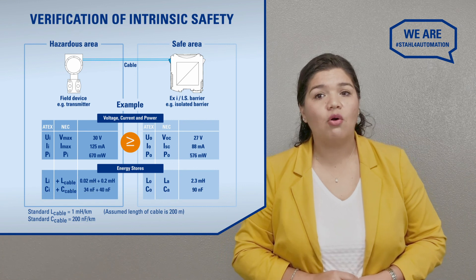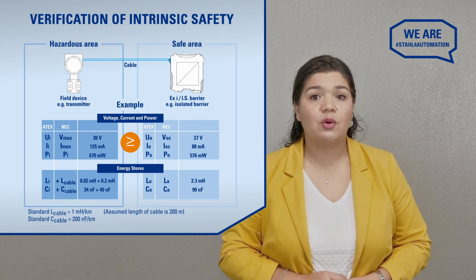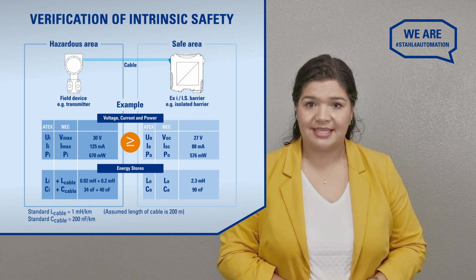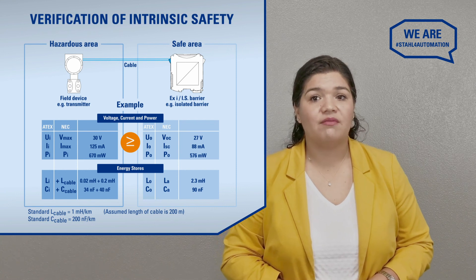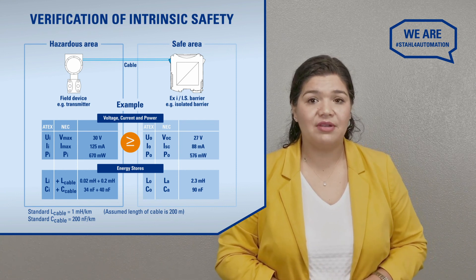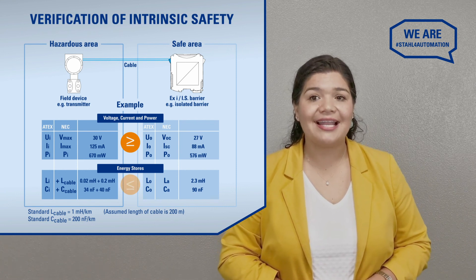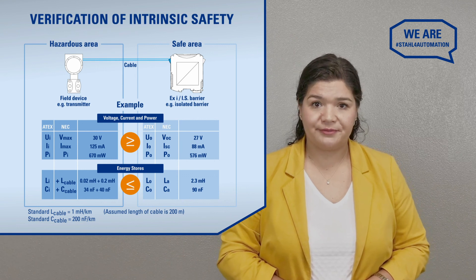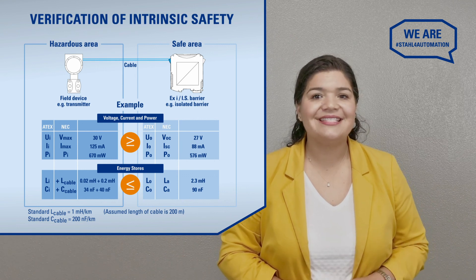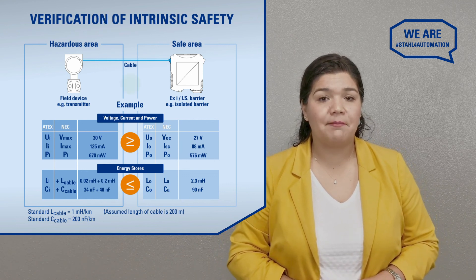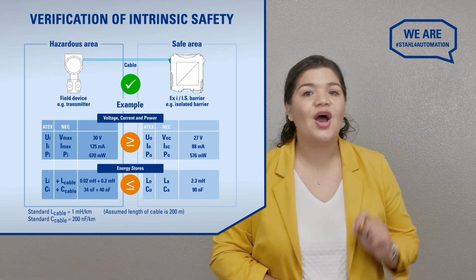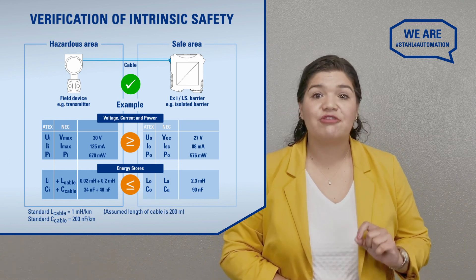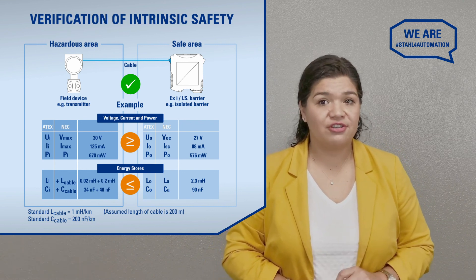Now, we have got all the values to complete our verification of intrinsic safety. The inductance and capacitance of the field device plus the cable length are less than or equal to those at the barrier. This table now proves that our example is, in fact, intrinsically safe. All you need to do now is to make a written or electronic record of this proof and you are done.